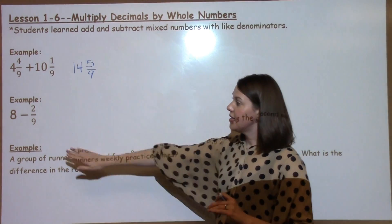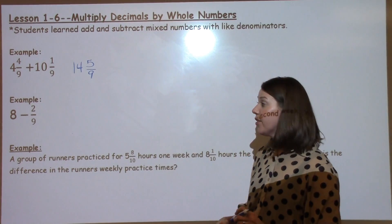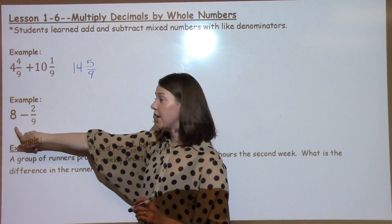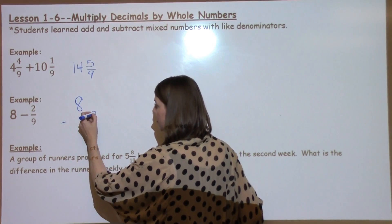This next problem is subtraction. I've got 8 minus 2 ninths. A question like this is kind of tricky for 5th graders because there's not a fraction over here. So setting up the problem, we write down 8 minus 2 ninths.